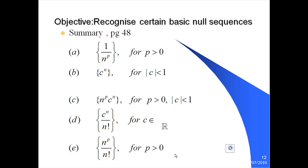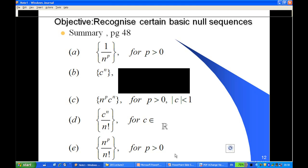For example, I'm going to use C and D. C^n over n factorial, and n^p over n factorial — these are basic null sequences. So let's go back to the solution again.